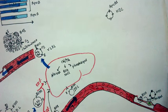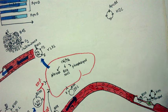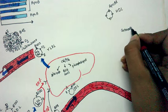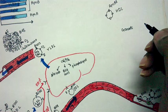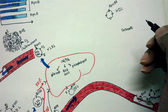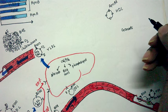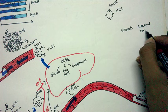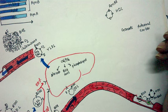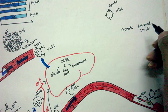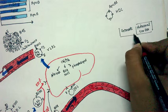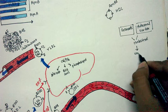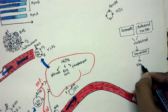HDL migrates around the body scavenging excess cholesterol and delivers it to the gonads — testis or ovary. In the testis, interstitial cells produce testosterone, and in the ovary, estrogen and progesterone are formed, since cholesterol is a precursor for these steroid hormones. HDL also delivers cholesterol to the adrenal cortex, where steroid hormones such as cortisol and cortisone are synthesized.